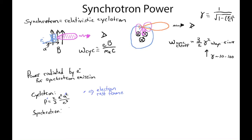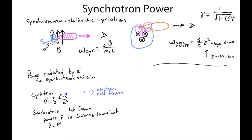I'll put a prime to indicate the electron's rest frame. The key to deriving synchrotron power is to move into the laboratory frame where the electron is moving relativistically. For synchrotron emission in the lab frame, this isn't so hard because power is a Lorentz invariant — meaning under Lorentz transformations, power is unchanged. Everybody can agree what the power radiated is. So in the lab frame, P equals P-prime. Power is the change in energy W per time.